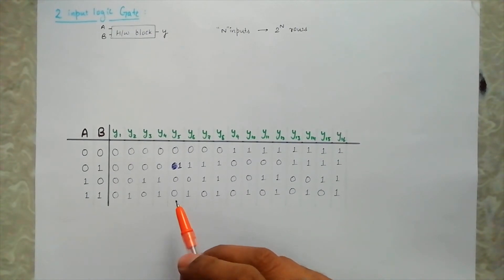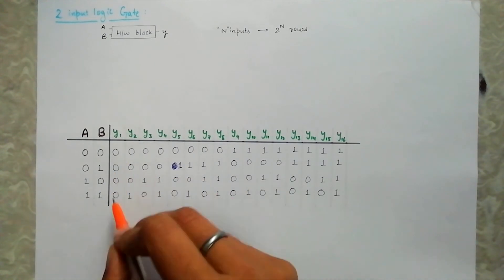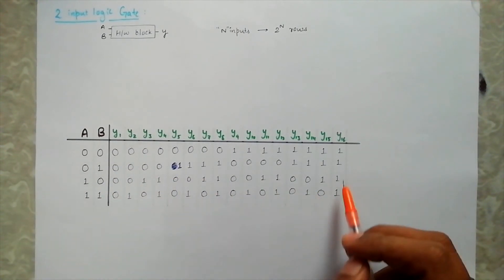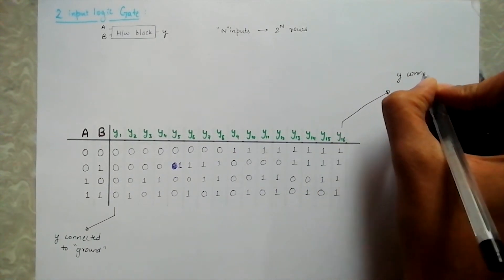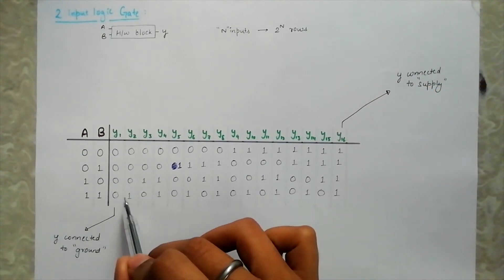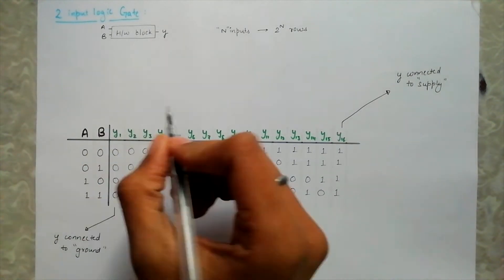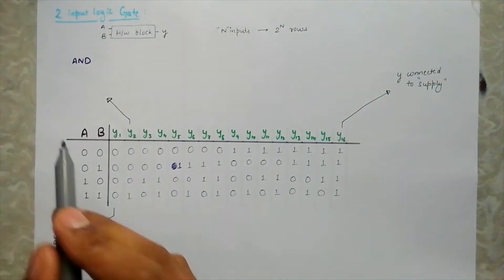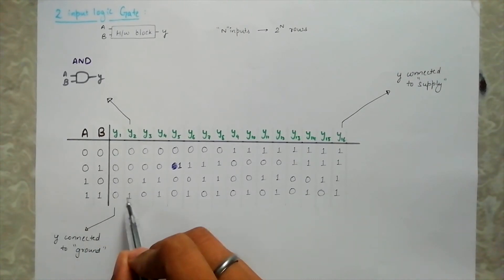Here also, we see that the first case and the last case are independent of input and are always either on a low level or a high level. Similar to single input, they are also connected to ground and supply voltage. For the second possibility, observe that Y is 1 only when A and B both are 1. So this in digital logic is represented using an AND gate with this symbol. AND gate because the output is true when both A and B are true.